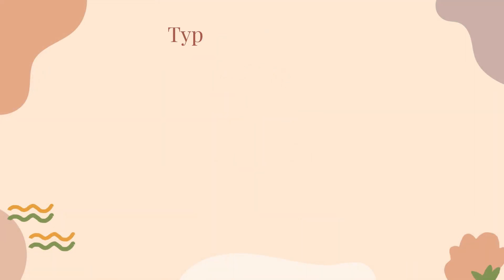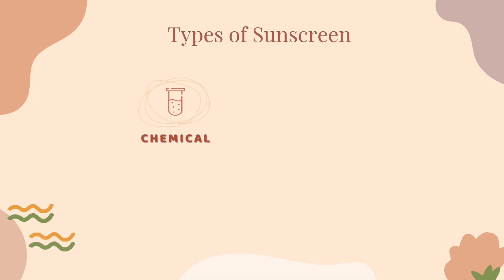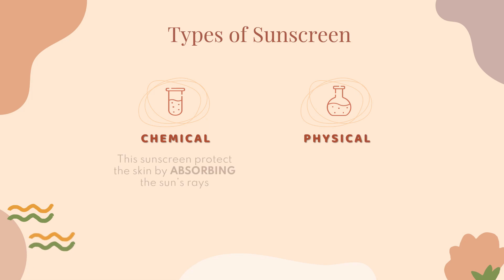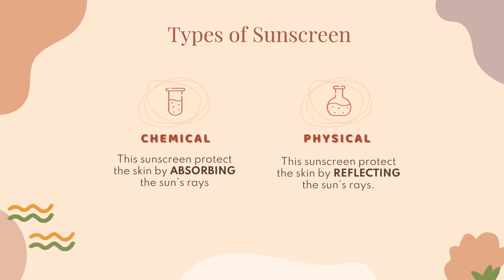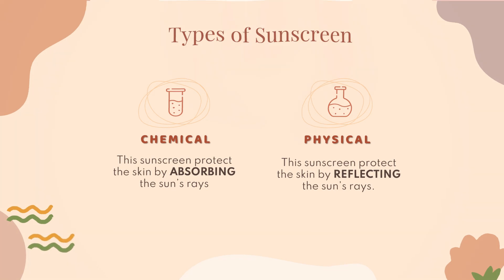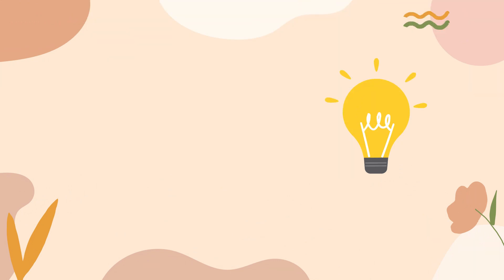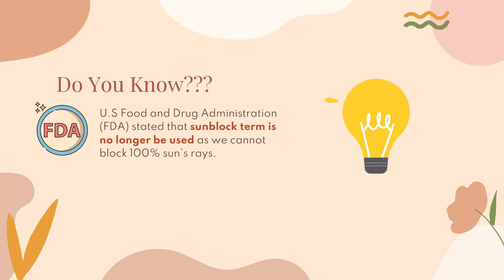There are two basic types of sunscreen: chemical sunscreen and physical sunscreen. Chemical sunscreen protects our skin like a sponge — it absorbs sun rays — while physical sunscreen protects the skin like a shield, reflecting the sun rays. The United States Food and Drug Administration (FDA) stated that the term 'sunblock' is no longer used, as we cannot block 100% of sun rays. That is why it is now called sunscreen instead of sunblock.